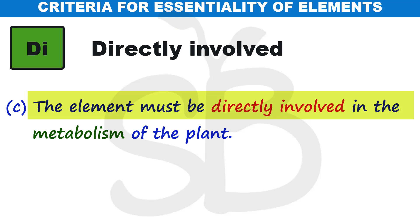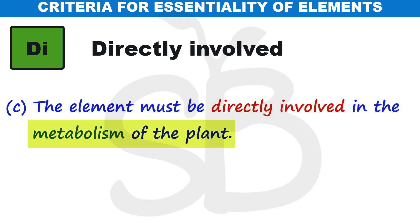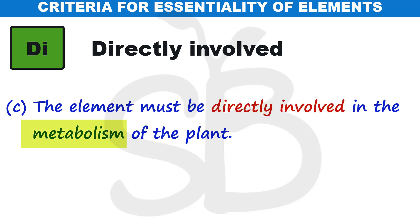The third criterion is that the element must be directly involved in the metabolism of the plant — meaning it must be directly involved in the plant's metabolic processes. Metabolism includes anabolic processes such as photosynthesis (building up) and catabolic processes such as respiration (breaking down). Different metabolic processes are directly involved with these essential elements.